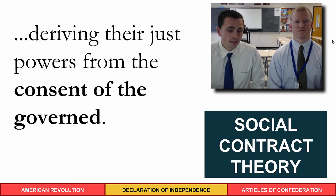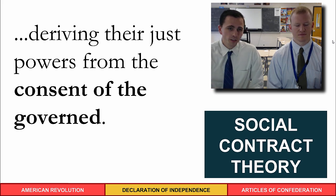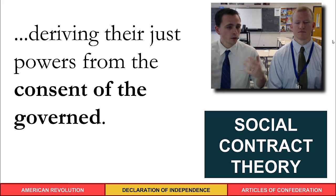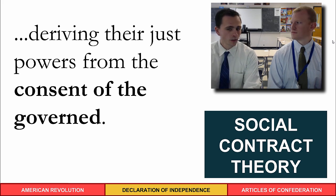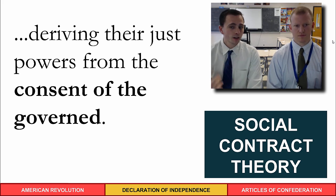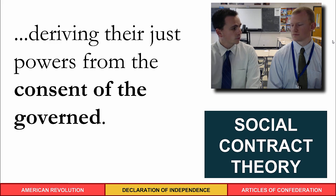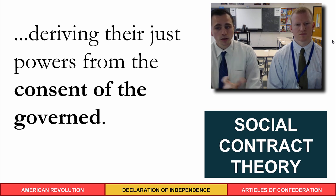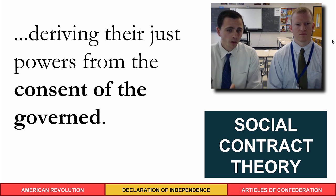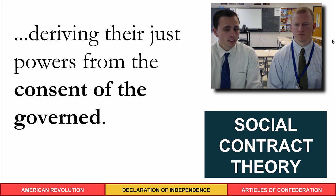The Declaration states governments derive 'their just powers from the consent of the governed,' meaning a government doesn't have ultimate power on its own — the power comes from the people. This ties into social contract theory: people give up certain rights to the government in exchange for the government protecting their natural rights, providing services, and keeping them secure. If the government violates those rights, that connects to the right to revolt.